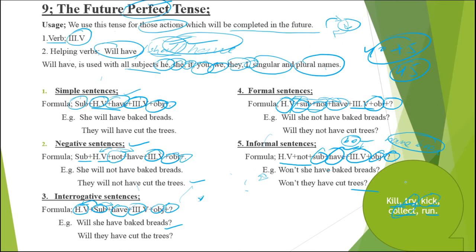Fourth verb is 'collect.' I collect papers. I do not collect papers. Do I collect papers? Don't I collect papers? I collected papers. I did not collect papers. Did I collect papers? Didn't I collect papers? I will collect papers. I will not collect papers. Will I collect papers? Won't I collect papers? I am collecting papers. I am not collecting papers. Am I collecting papers? Aren't I collecting papers? I was collecting papers. I was not collecting papers. Was I collecting papers? Wasn't I collecting papers? I will be collecting papers. Won't I be collecting papers? I have collected papers. Have I collected papers? Haven't I collected papers? I had collected papers. Had I collected papers? Hadn't I collected papers? I will have collected papers. I will not have collected papers. Will I have collected papers? Will I not have collected papers? Won't I have collected papers?